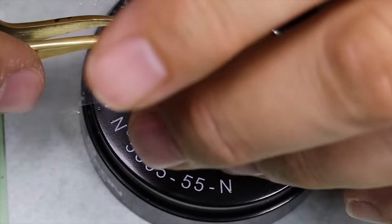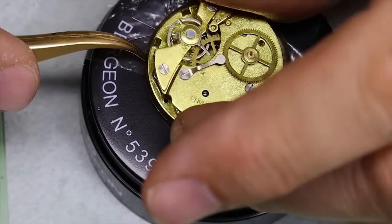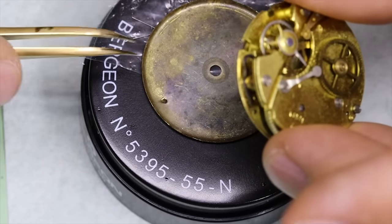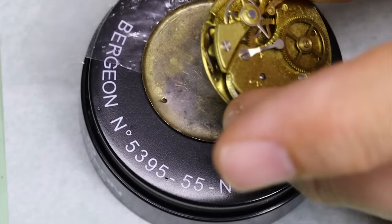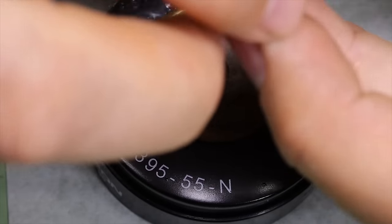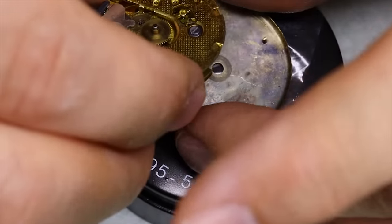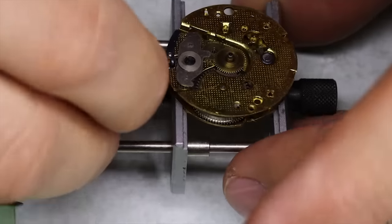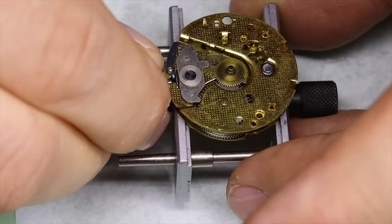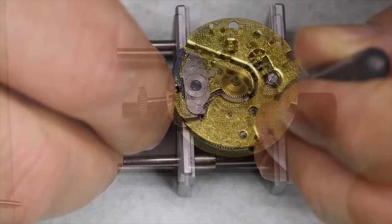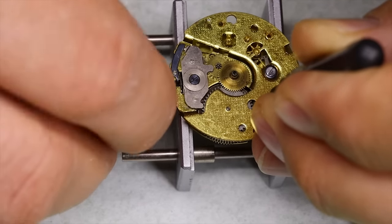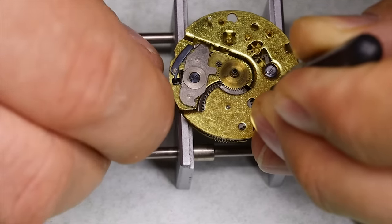And these pin lever watches, many of them have zero jewels, also indicating of course that it was a budget watch, budget movement. And it was even intended to be so. When Roskopf invented this movement in the late 1860s, it was exactly meant to make watches affordable for the common man. And they were produced in big numbers, all up until the quartz crisis, and in some regions even longer.